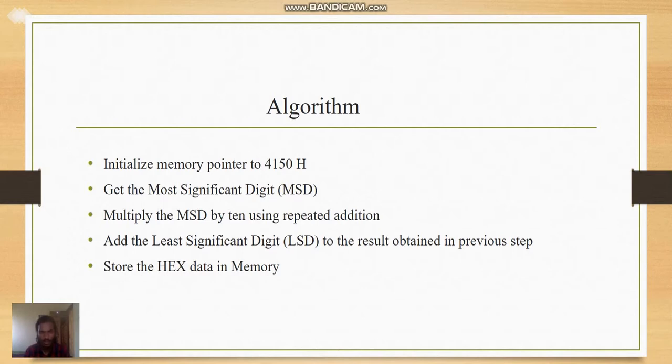For that, we need to write the algorithm first. The algorithm is as follows: initialize memory pointer to 4150H, get the Most Significant Digit (MSD), multiply the MSD by 10 using repeated addition. Why by 10? Because here we have taken a two-digit number. That is why we have to multiply the most significant digit by 10, and then add the Least Significant Digit (LSD) to the result obtained in the previous step. Finally, we will store the hex data in memory.